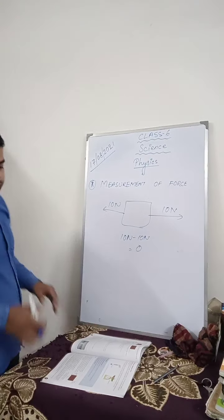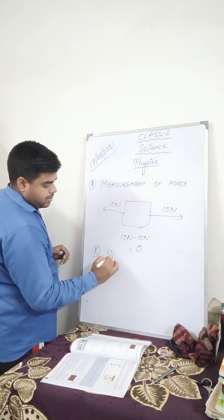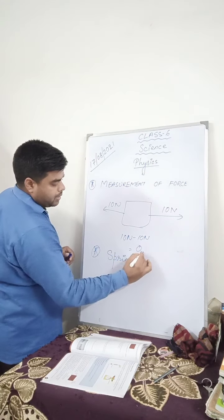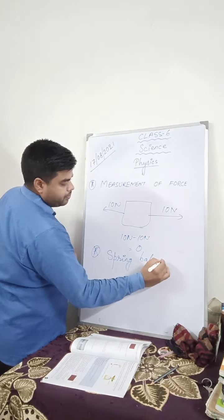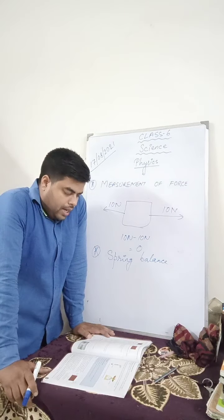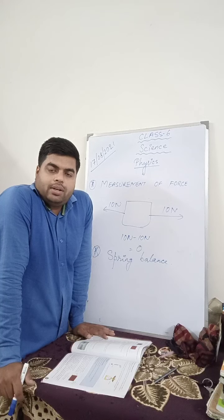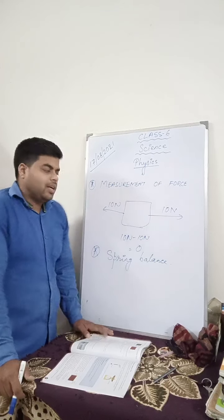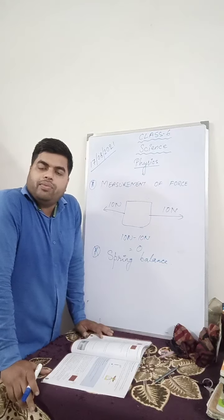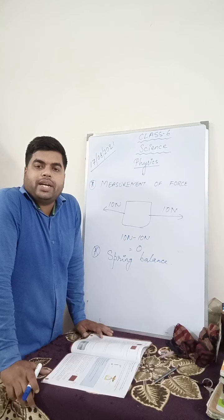Next is the spring balance to measure force. A spring balance is used to measure force. Remember: if the forces are acting in the same direction, they will be added; if the forces are acting in the opposite direction, they will be subtracted. A spring balance gives the weight of the object hung on it.